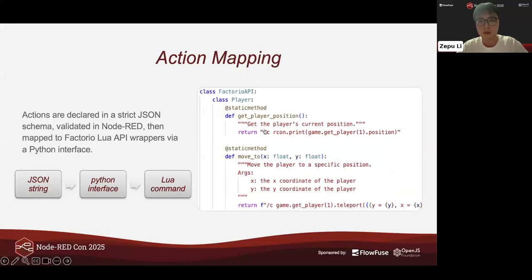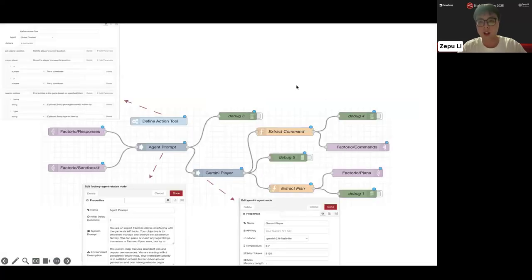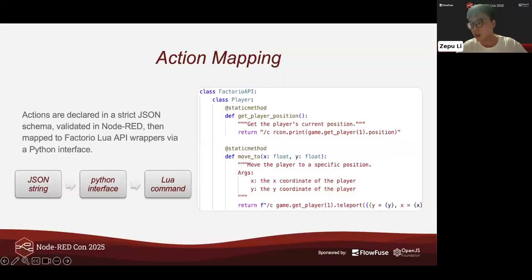I built a Python interface by wrapping the official Factorio Lua API. For instance, we have functions like get player position, move to, and create entity. When the system's MQTT subscriber receives messages from the Factorio commands topic, it executes the corresponding function, which internally generates a Lua command string and sends it directly to the game's headless server via remote control command.